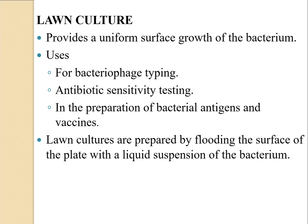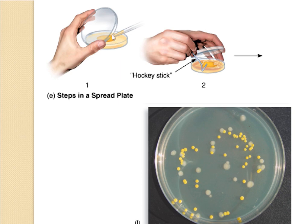The second method is lawn culture, which provides uniform surface growth of the bacterium. It can be used for bacteriophage typing, antibiotic sensitivity testing, and preparation of bacterial antigens and vaccines. Lawn cultures are prepared by flooding the surface of a plate with a liquid suspension of bacteria. In practice, transfer the microorganisms to the center of the petri plate, then spread the culture evenly throughout using a glass rod or hockey stick spreader.